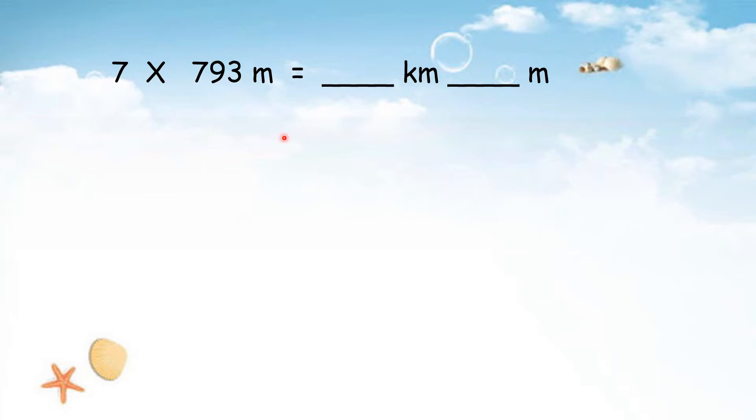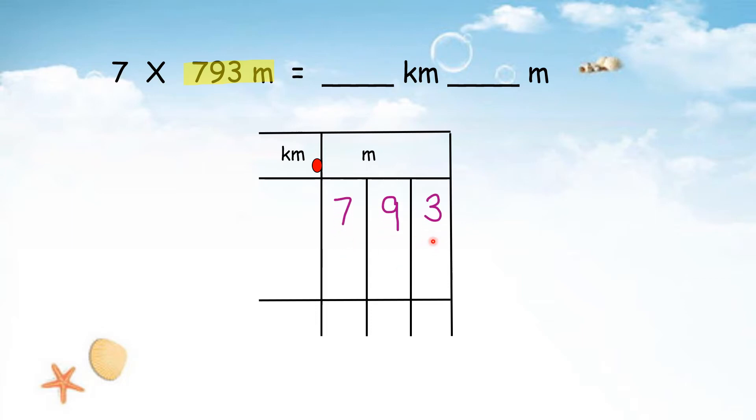Example 2: 7 times 793 meter, and the answer in km and m. For km and m, we will choose 1-3 box. Now we fill in 793 m in the 1-3 box. So 793, we will write in the column of meter. We write like this: 793. And then for km, we add a 0 here. We write the digit of 0 here. After that, times 7.